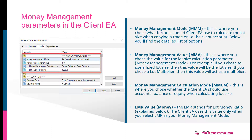The first one is MMM, which is money management mode. The second is MMV, which is money management value. Those are the two most important ones. The others are MMCM, which is money management calculation mode, and LMR value. Those two are more advanced, but the first two are the most important. MMM is where you choose what formula — what method — the client should use to calculate the lot size when copying a trade on the client account.